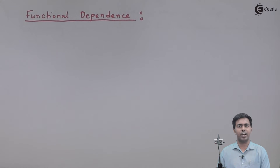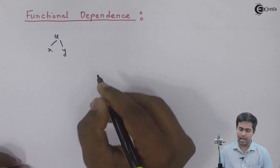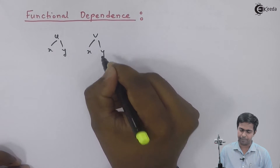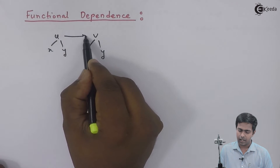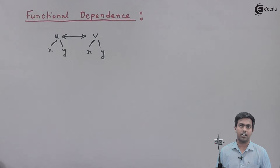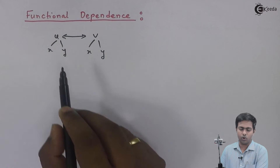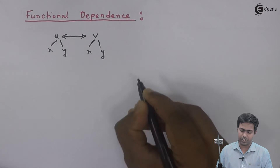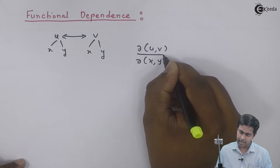Hi friends. In this video we are going to learn a new concept called functional dependence. Let's say u is a function of x and y, and v is also a function of x and y. If we want to understand the relationship between u and v — whether they are dependent on each other or independent — this is called functional dependency. To find out the functional dependence we use the condition: the Jacobian of u, v with respect to x, y.